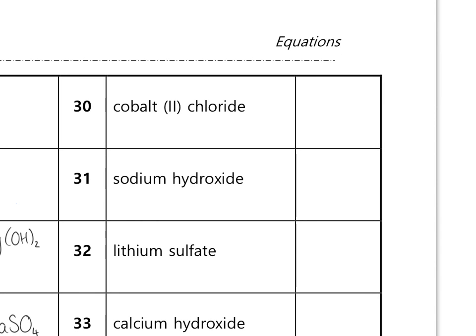Example 30: cobalt(II) chloride. Cobalt is Co with valency two (from the Roman numeral in brackets); chloride is Cl with valency one. Swap and drop gives CoCl₂. Note that 'Co' must be written with a capital C and lowercase o — a capital O would mean oxygen, giving you carbon and oxygen instead of cobalt.